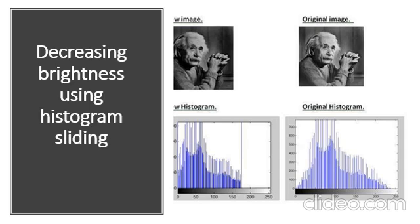It is clear from the histogram of the new image that all the pixel values have been shifted toward right. And thus it can be validated from the new image that new image is darker and now the original image looks brighter as compared to the new image.